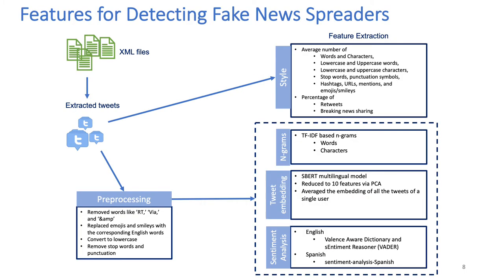For extracting the features to identify fake news spreaders, we first extracted tweets from the XML file and then preprocessed the content as per requirement for each feature, as some features require clean text and some others require the text as-is for incorporating underlying details of the author's writing. We consider four different types of features. Stylistic features capture the writing style of the user, which include the average number of words and characters, lowercase and uppercase words and characters, stop words, punctuation, hashtags, URL mentions, emojis and smileys from the tweets. We also consider the percentage of user tweets that are retweets and the percentage of user tweets that are sharing of breaking news.